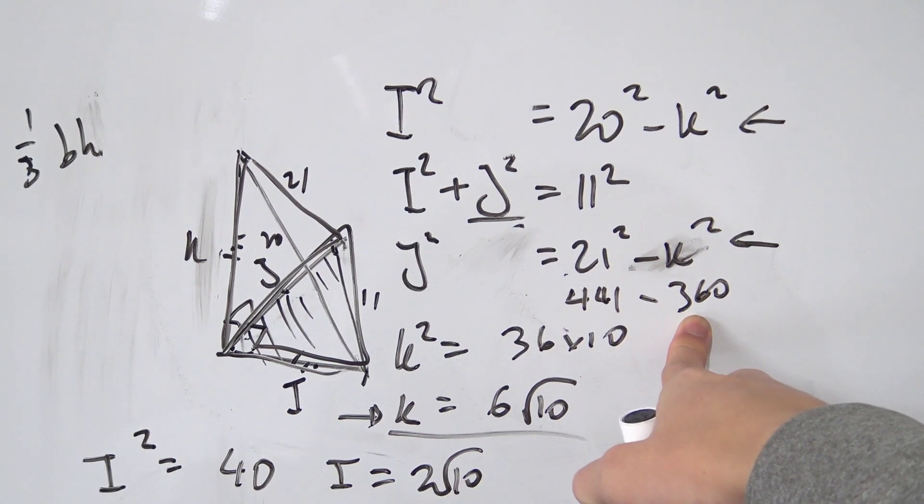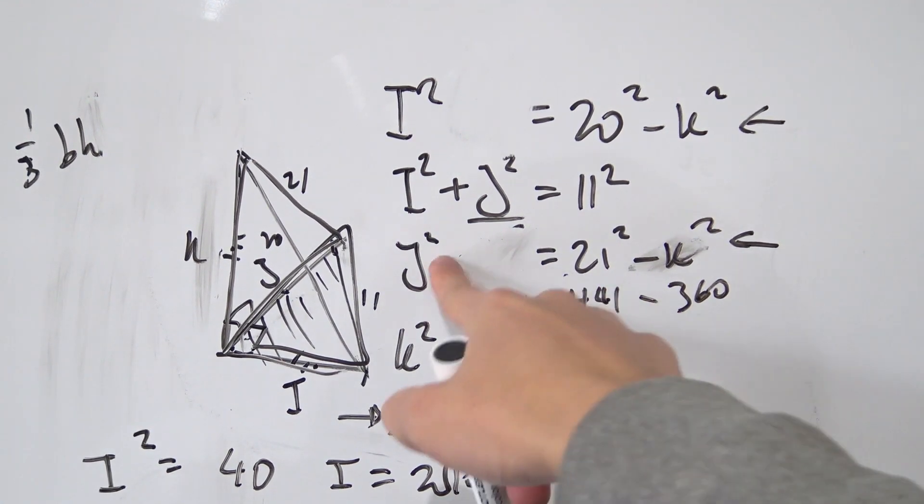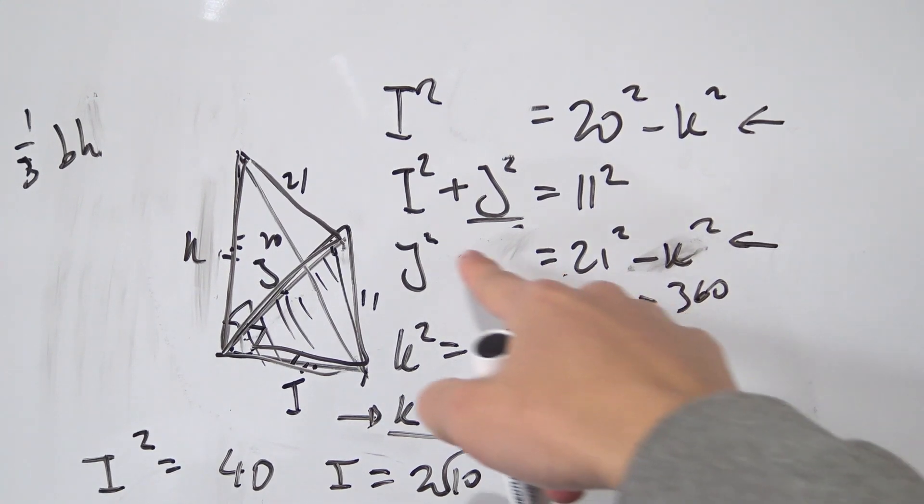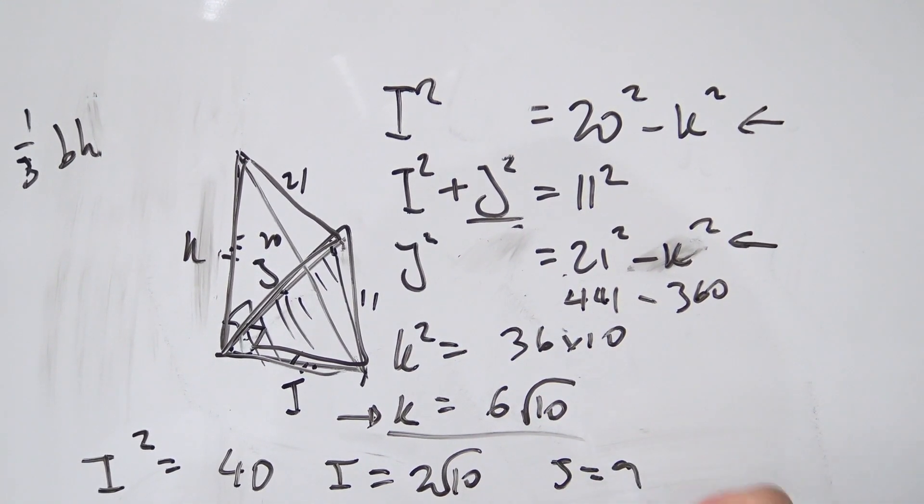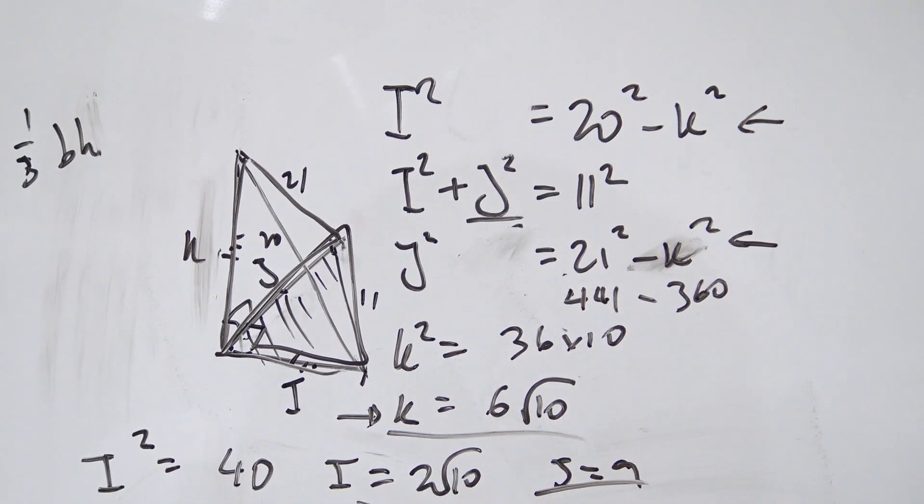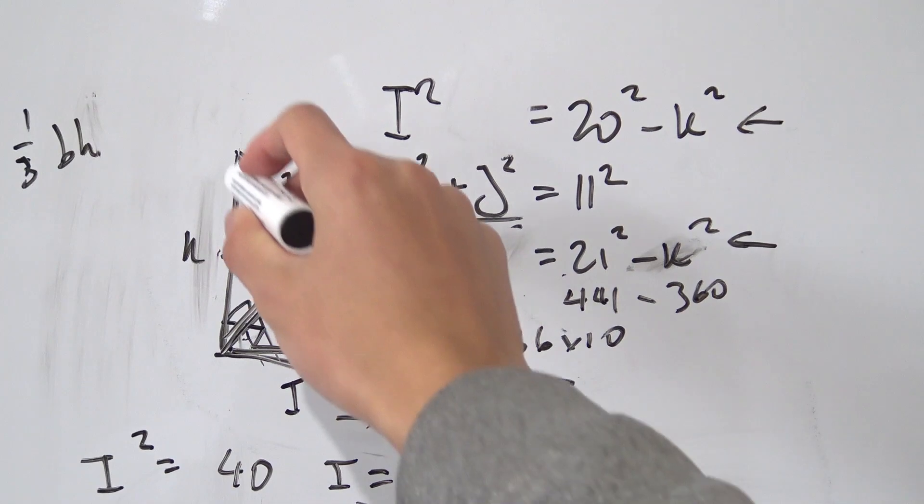And that should evaluate to 81. So we have J squared being equal to 81. So that means J is equal to 9. So we have J being equal to 9 as well. So those are our three solutions for our three unknowns. And now we know our dimension of our pyramid.